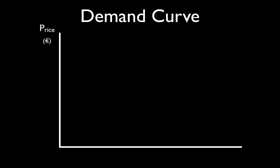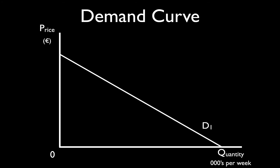Looking at the demand curve — remembering we're in microeconomics — we have the rule of 11 but we don't have a supply curve, so we put in what we can. We have the demand curve, price with the currency, the origin, thousands of units per week, the quantity, the title, and D1. To find the amount of this good — t-shirts, ice cream cones, whatever — that is bought at price P1, say 10 euro, we go out from the price, touch the demand curve, and go down. That tells us the exact quantity purchased at that price.